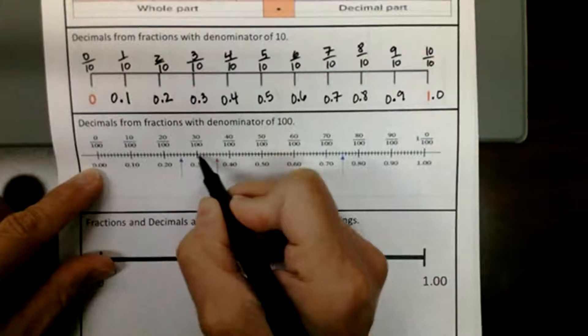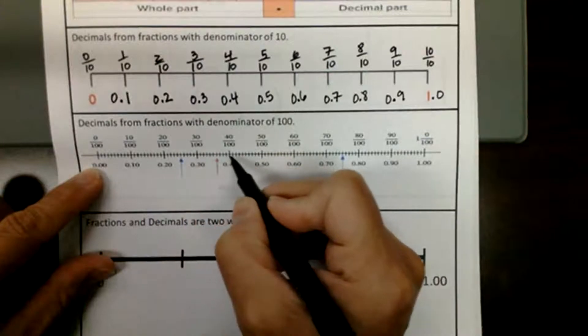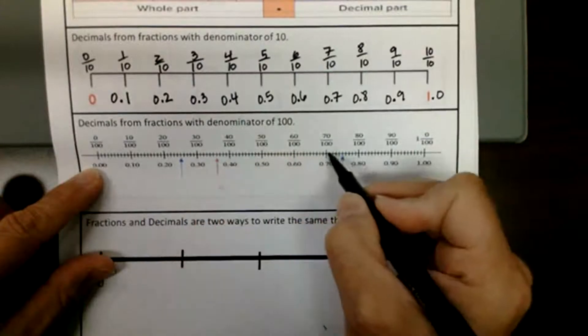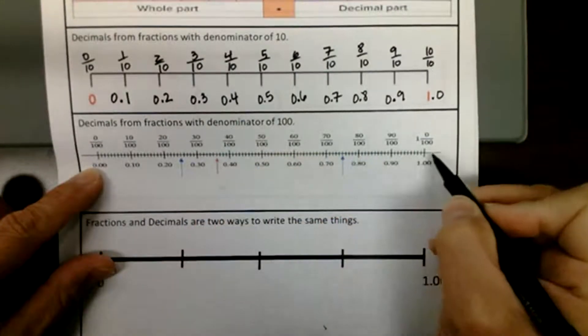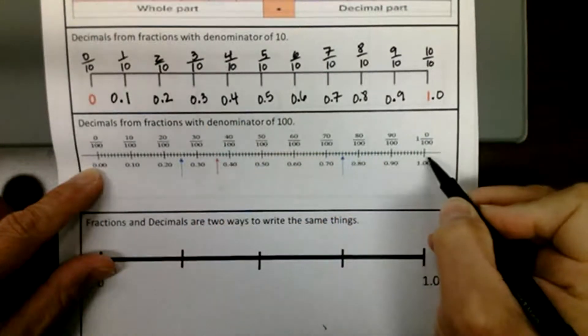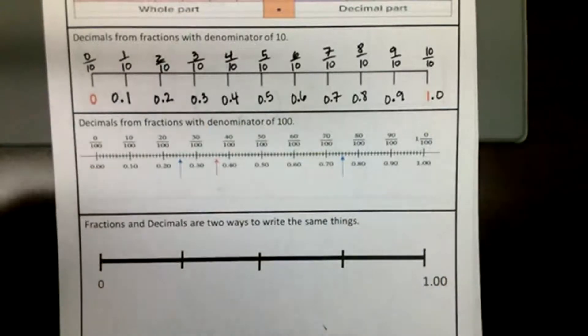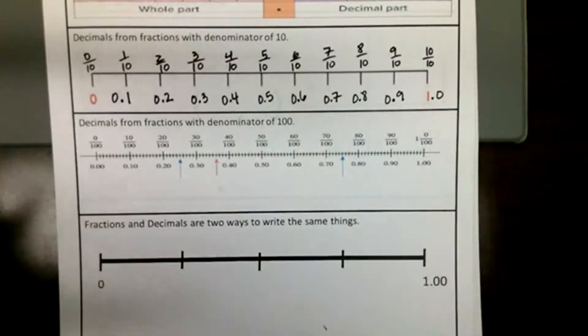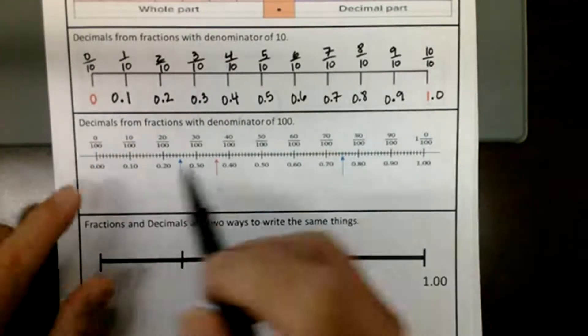So counting by tens: ten, twenty, thirty, forty, fifty, sixty, seventy, eighty, ninety, a hundred. I'm going to slow down and just do that again because I don't know how clear that was.